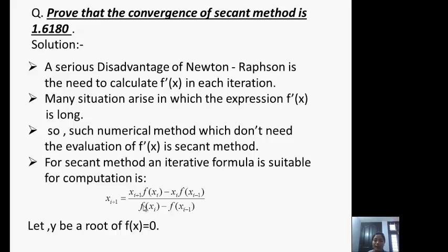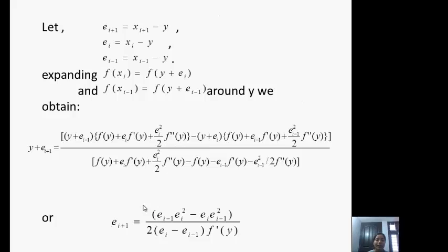Let y be a root of f(x) = 0. Let e_{i+1} = x_{i+1} - y, e_i = x_i - y, e_{i-1} = x_{i-1} - y. Expanding f(x_i) and f(x_{i-1}) around y we obtain e_{i+1} = x_{i+1} - y. Here x_{i+1} is our assumed root and y is our actual root.